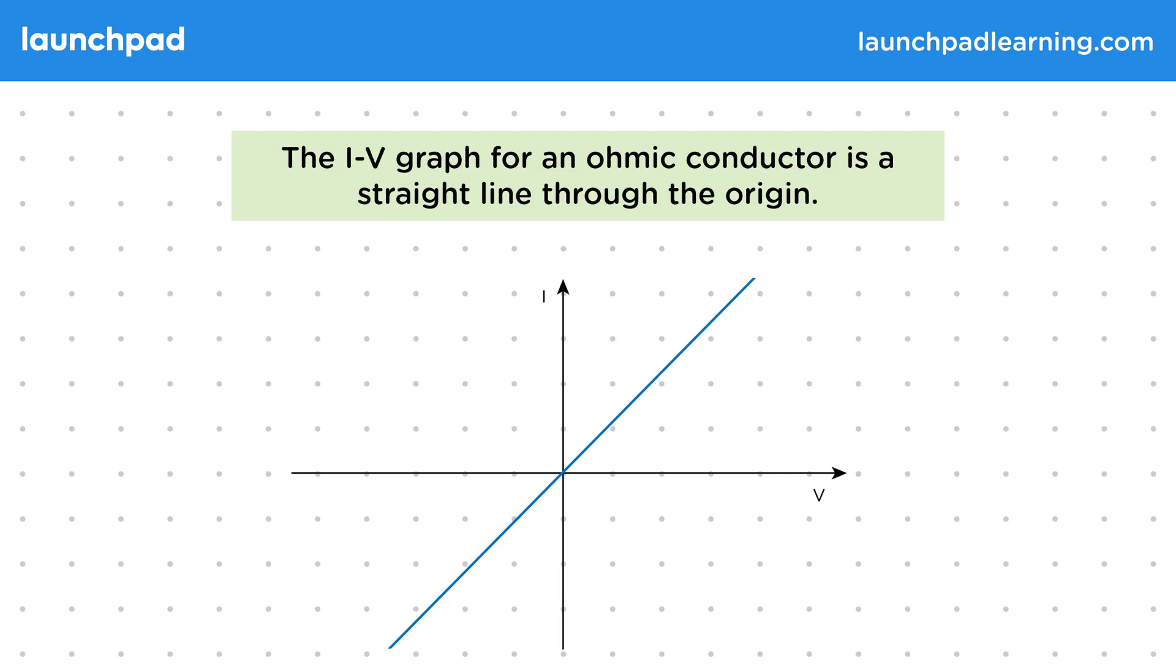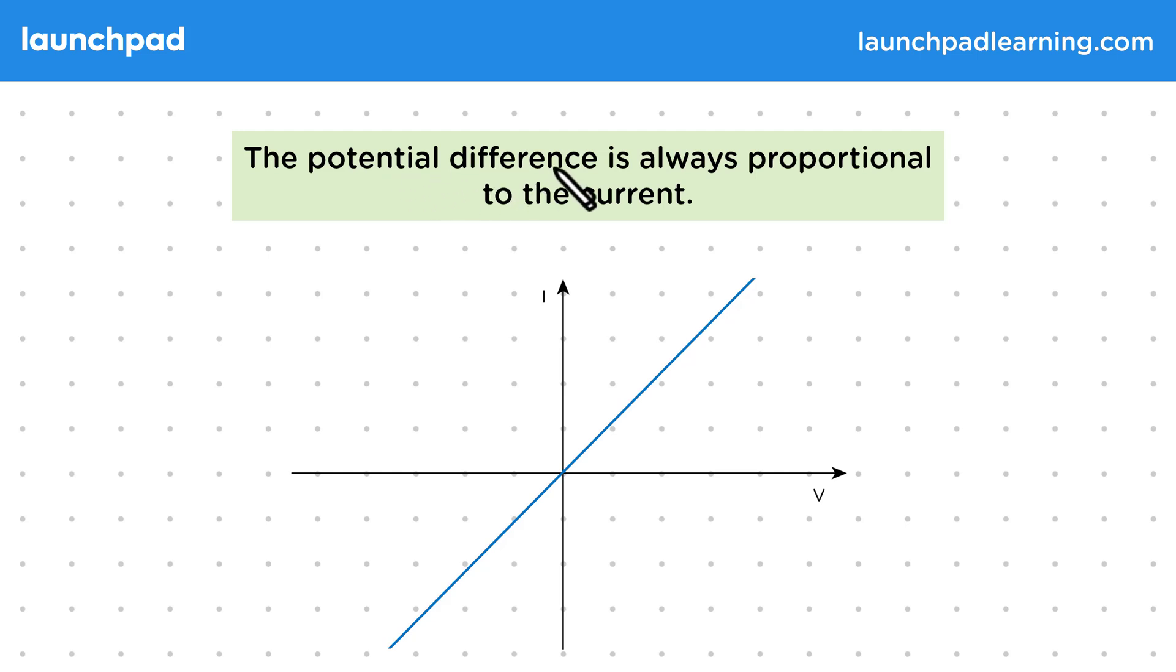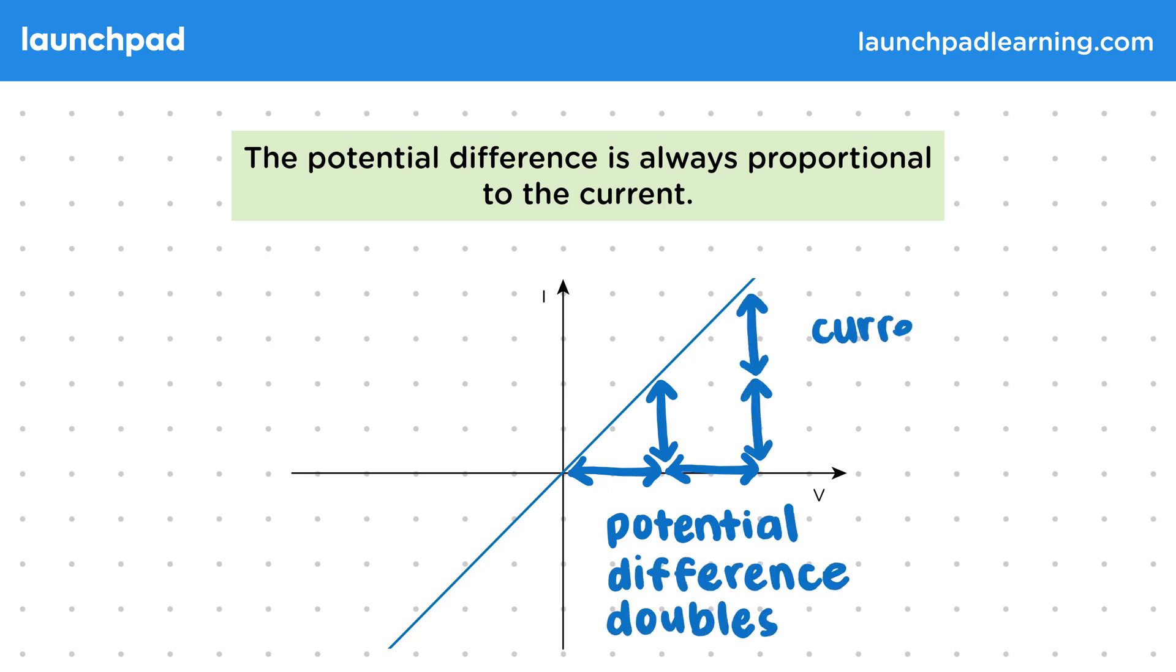So what else can we say about this relation? Well, the potential difference is always proportional to the current. So we know this because the IV graph is a straight line through the origin. What this means is that we can look at one current and potential difference. Then, when the potential difference doubles, the current must also double.